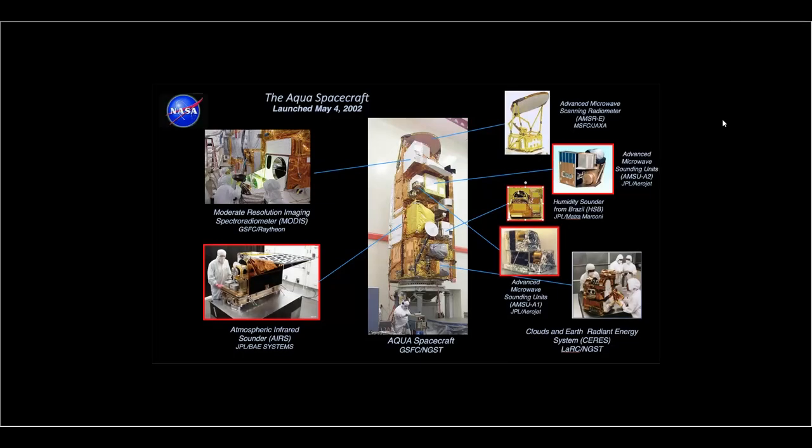Three years after Terra got put into orbit, its little sister Aqua followed it. It also has MODIS on it, but it also has other systems that it uses and takes advantage of, as shown here in this diagram. So Aqua is going to be another important layer that we're going to be using in WorldView.